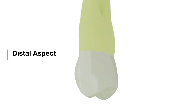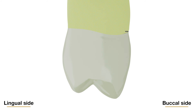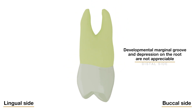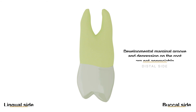From the distal aspect, the curvature of the cervical line is less on the distal than on the mesial surface, often showing a straight line buccolingually. The developmental marginal groove and depression on the root on the distal aspect are not appreciable, and bifurcation of the root is abrupt near the apical third.